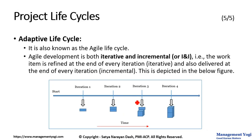The last life cycle is the Adaptive Life Cycle, also known as the Agile Life Cycle — agile and adaptive are used interchangeably. The Agile or Adaptive Life Cycle is both iterative and incremental — I call it the I and I life cycle. The work item is refined at the end of every iteration, and you are also delivering incrementally at the end of every iteration. So you are combining both the correctness of solution and fast delivery.